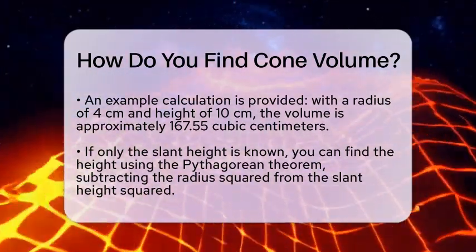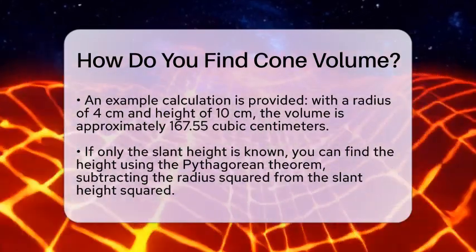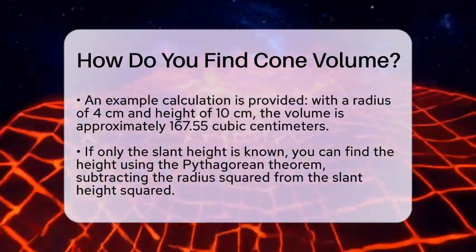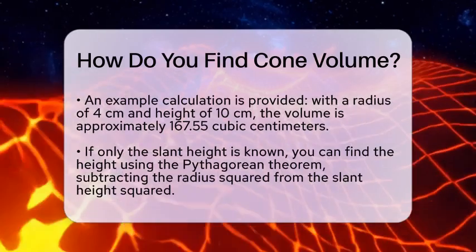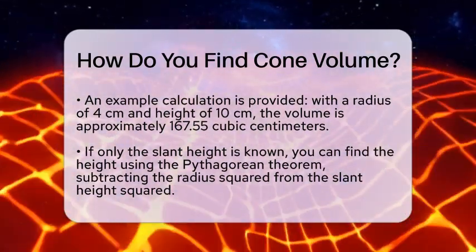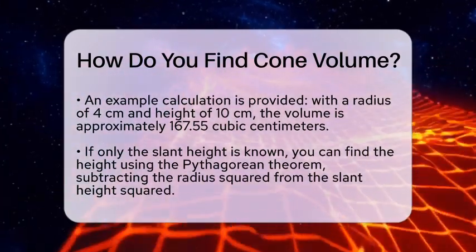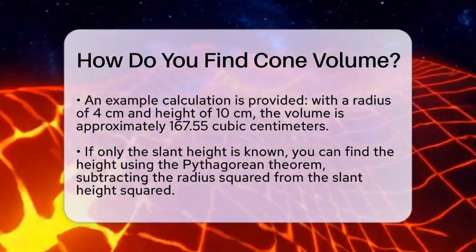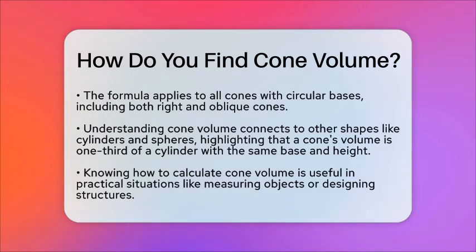Remember, this formula works for any cone with a circular base, whether it's a right cone with the vertex directly above the center, or an oblique cone where the vertex is off-center. If you only know the slant height, which is the diagonal side from the edge of the base to the tip, you can find the height using the Pythagorean theorem. Just subtract the radius squared from the slant height squared and take the square root.